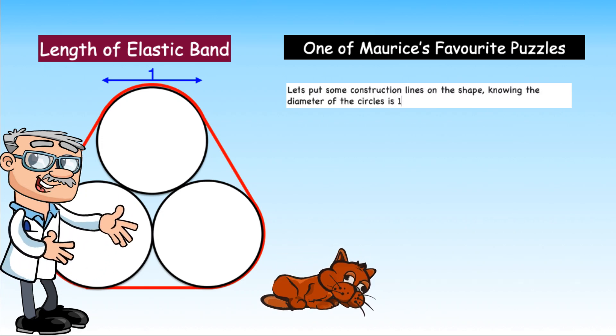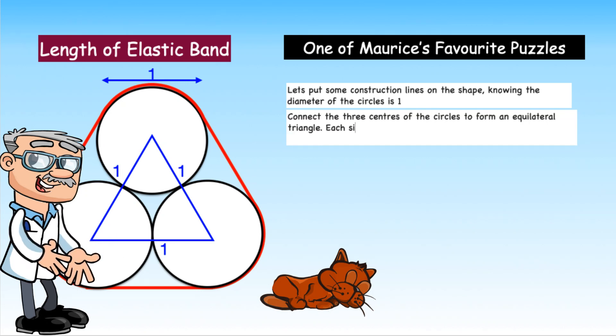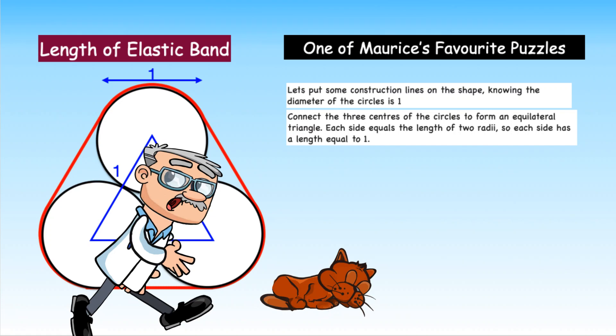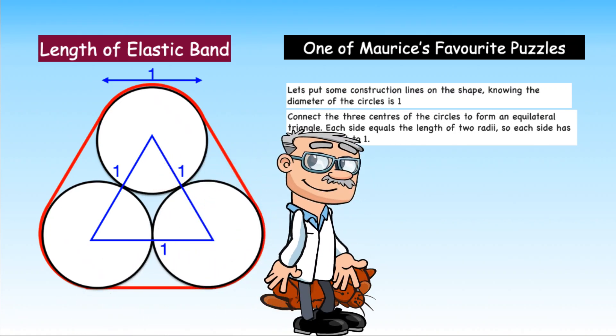Let's first of all put some construction lines on the shape. Knowing the diameter of the circles is one, now let's connect the three centers of the circles to form an equilateral triangle. Each side equals the length of two radii, so each side has a length equal to one.